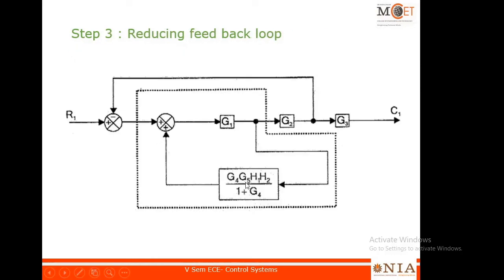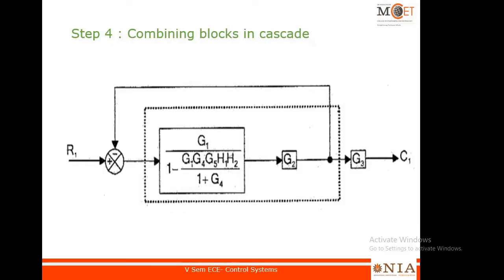I have multiplied all the cascaded elements and split the summer into two. Now I can reduce the inner feedback loop using the rule G1/(1 + G1·[feedback function]), making it a single loop. After this, it gets multiplied with G2, and with a unity feedback, reducing again gives a single block, which then has to be multiplied with G3 to find C1.